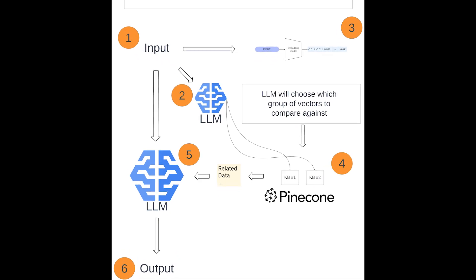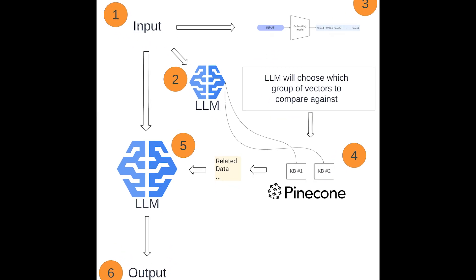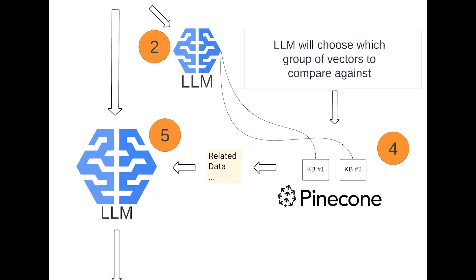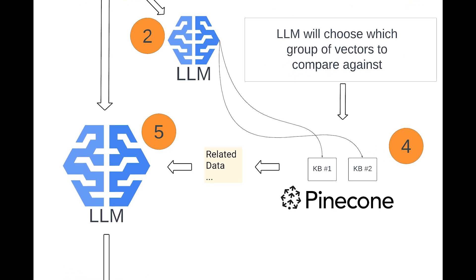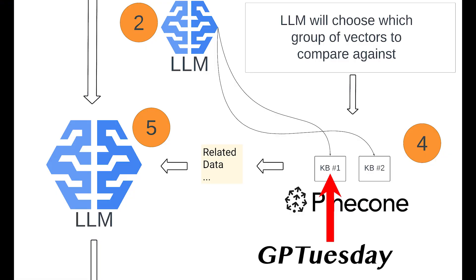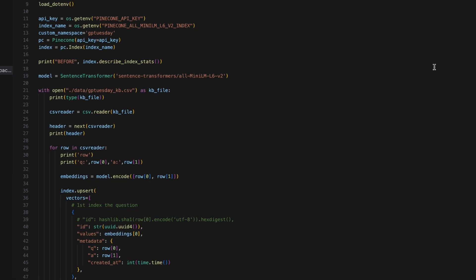We will now show how you can use a Reason and Act, or ReAct, agent for accessing multiple knowledge bases using Pinecone. The first knowledge base will hold vectors representing Q&As related to the Miami-based weekly AI meetup, GPTuesday. The second knowledge base will hold vectors representing Q&As related to me, yours truly. Let's ingest our knowledge.